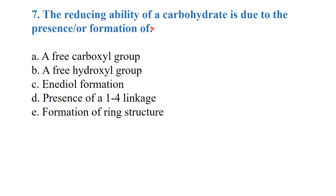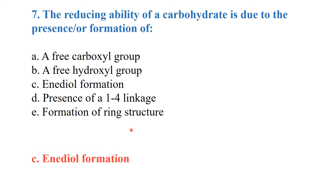The reducing ability of a carbohydrate is due to the presence or formation of — option A: free carboxyl group, option B: free hydroxyl group, option C: enediol formation, option D: presence of 1-4 linkage, or formation of ring structure. The reducing ability is due to enediol formation.